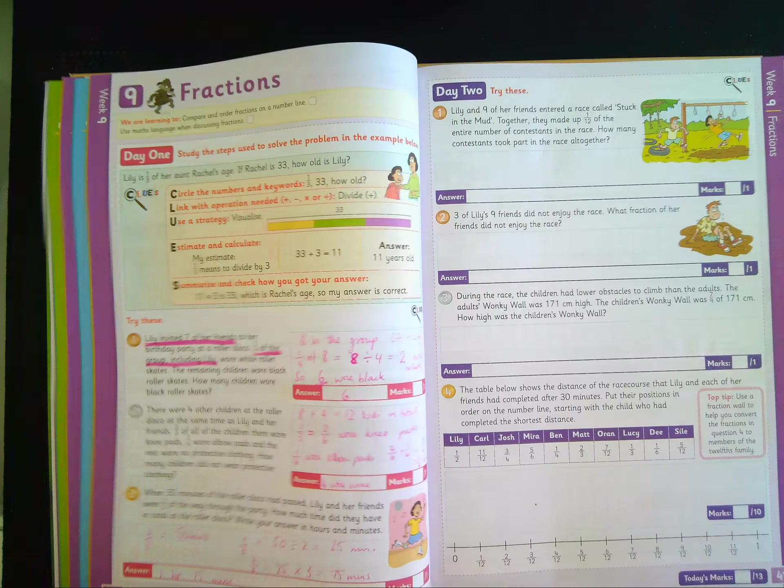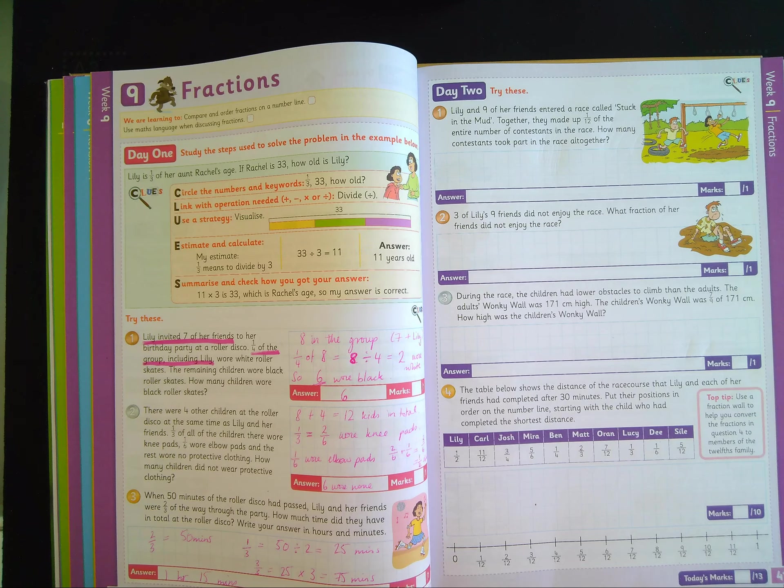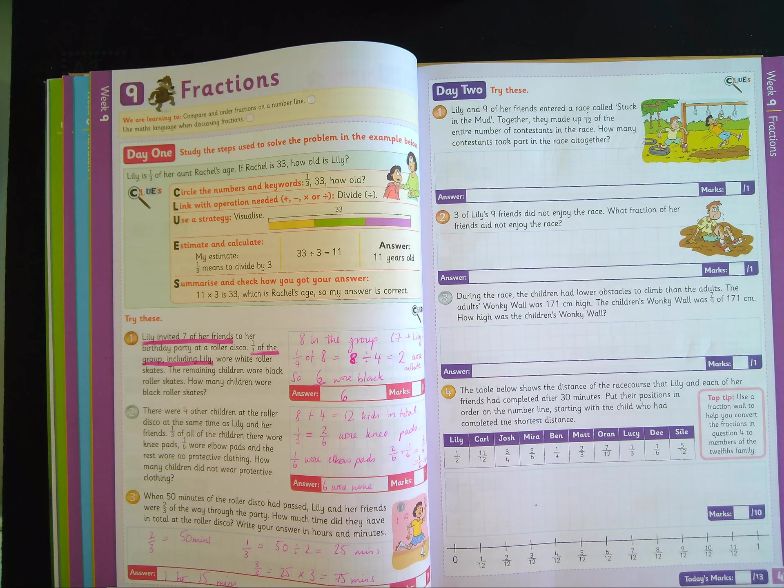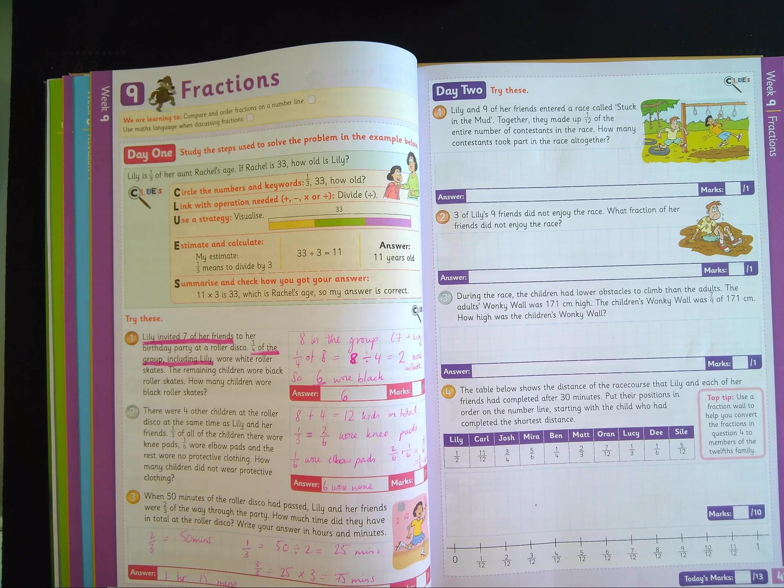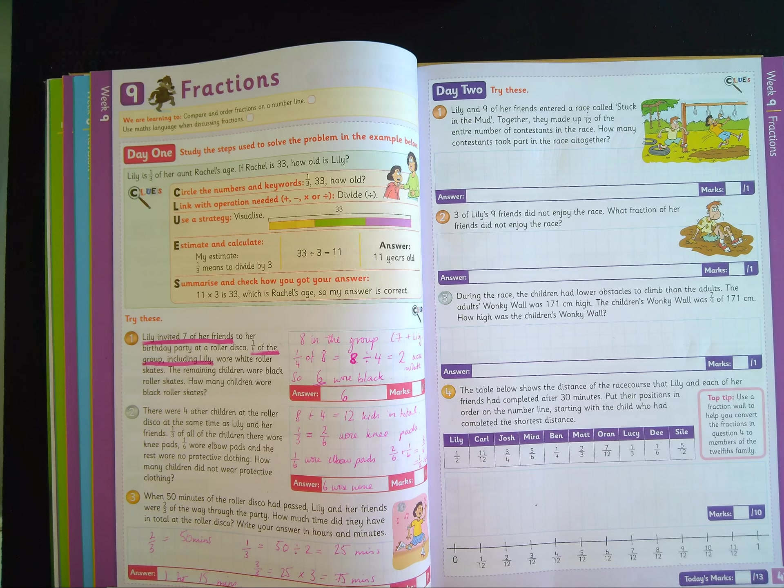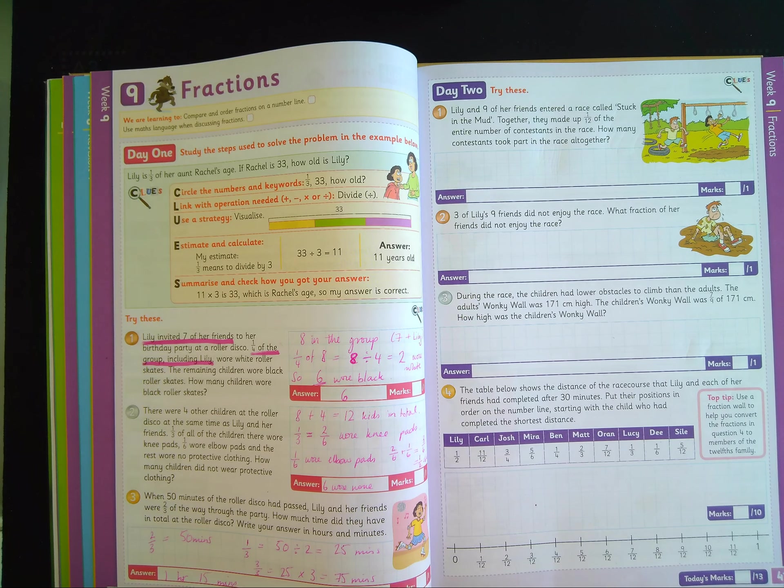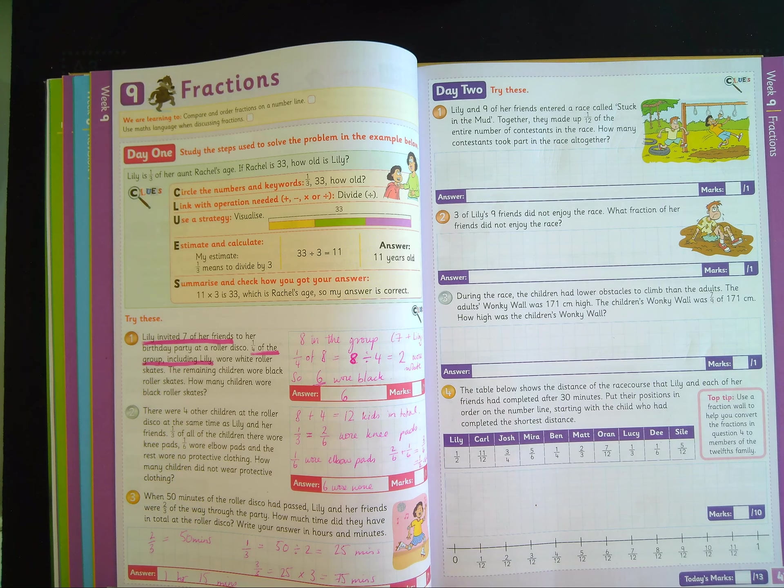Now, number two, it says three of Lily's nine friends did not enjoy the race. What fraction of her friends did not enjoy the race? Well, for that one, you simply just have to write one of the numbers over the other one. And that will give you the answer. But it is best practice to simplify your answer. So how can you simplify the answer? See if you can divide the top and the bottom of the fraction by the same number. I think we'll all be able to do that one.